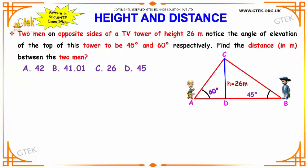Two men on opposite sides of a TV tower of height 26 meters notice that the angle of elevation to the top of the tower is 45 and 60 degrees respectively. We have to find the distance in meters between the two men.